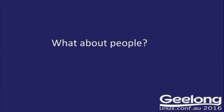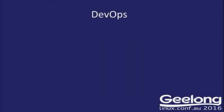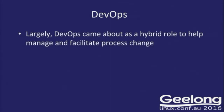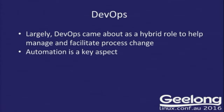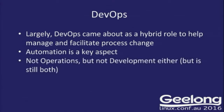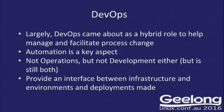Of course, with all of our infrastructure management and code and whatnot, there are people — there will always be people, even when everything is automated. DevOps. DevOps was largely a hybrid of operations, development, and infrastructure management, and they help facilitate all of the process change. The biggest focus is just on automation, especially as infrastructures are large and ephemeral — they come up, they go away, everything happens at once. DevOps people are not operations people but they're not development people either, and they still end up being both. They give the big interface of translation between infrastructure, environments, and deployments.